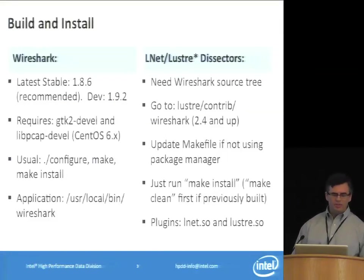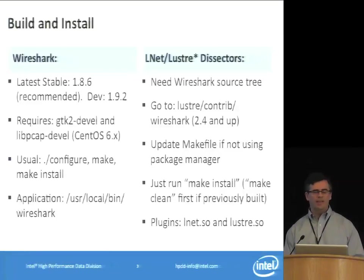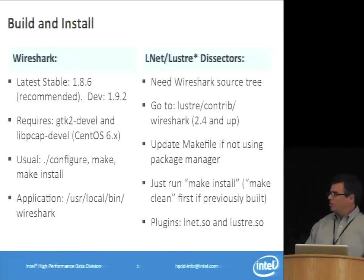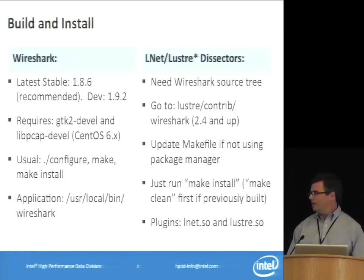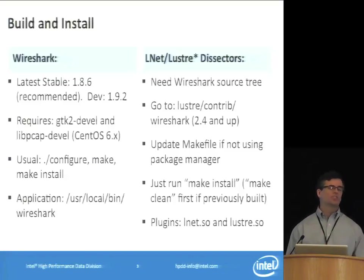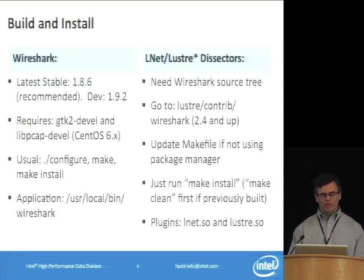To build the dissectors, you first need the Wireshark headers, which you can get through a package manager by installing Wireshark Devel. However, on CentOS 6.3 this came back with version 1.2.8, which is too old. The current stable version is 1.8.6 — get that source and build it yourself, along with GTK2Devel and LibPCAPDevel libraries. Do the usual config, make, make install. Then go into the Lustre contrib Wireshark directory in the 2.4 source tree, edit the makefile to point to your Wireshark source tree, and do a make install to put the dissectors into the appropriate location.